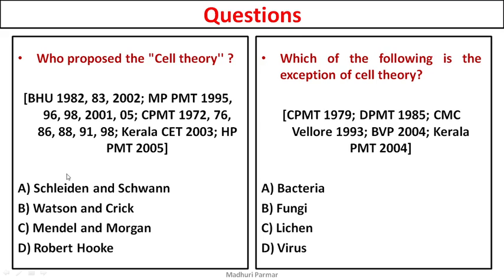The answer is Schleiden and Schwann. Now if you do not remember exactly who gave the cell theory, cancel other options. Robert Hooke was the one who found cells from cork and gave the name 'cell' — not cell theory. Mendel and Morgan are geneticists. Watson and Crick found the structure of DNA. So the remaining option is Schleiden and Schwann.